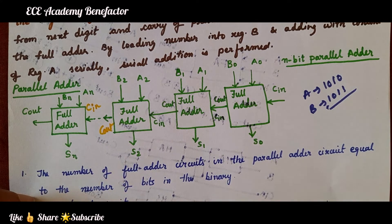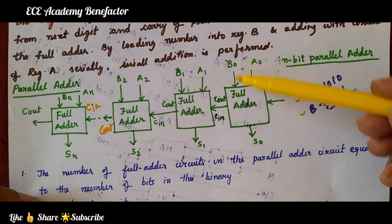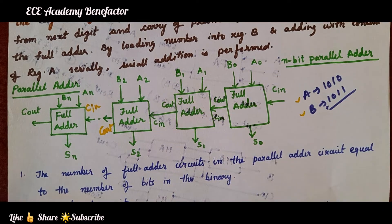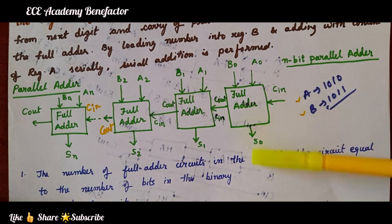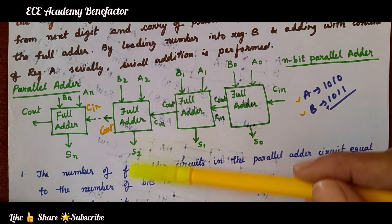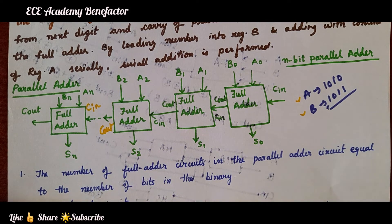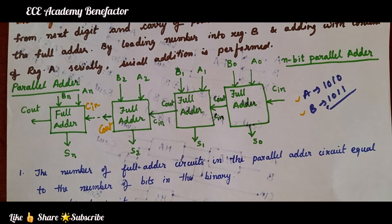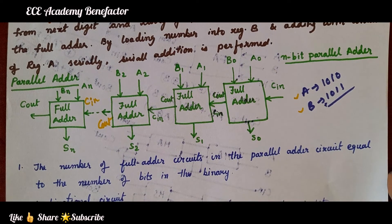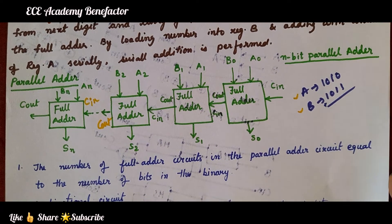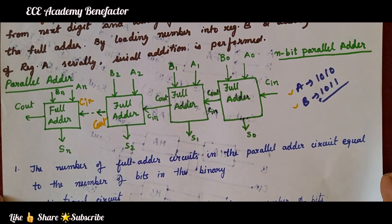In the parallel adder, we are adding two numbers A and B, but all the bits are loaded at a time into the full adders, and we get the sum S0, S1, S2, Sn all at once. So it is faster compared to the serial adder. In the serial adder, addition is done bit by bit at every clock pulse, making it slow compared to the parallel adder.